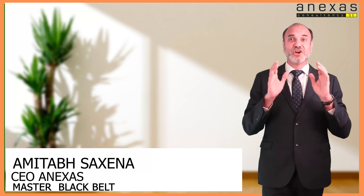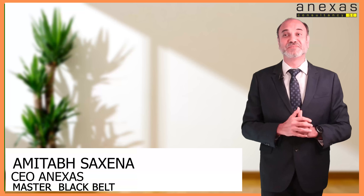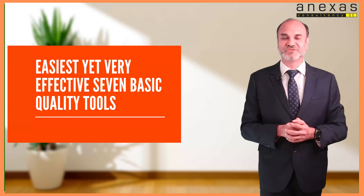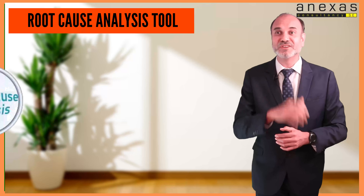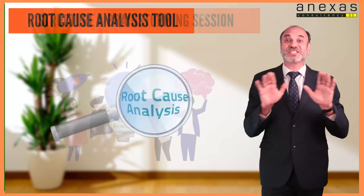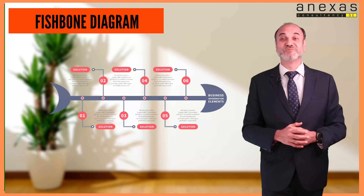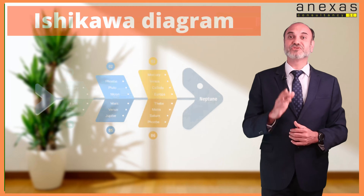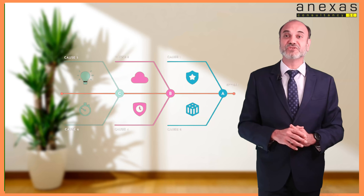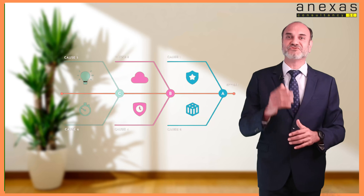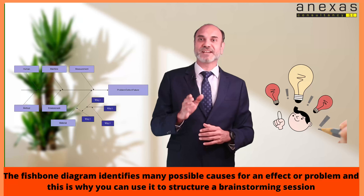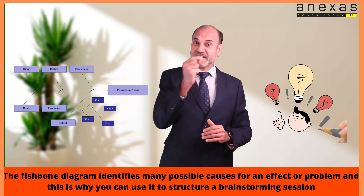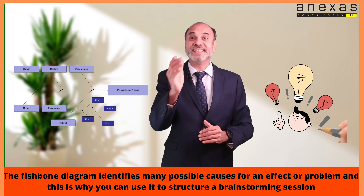Now we are going to talk about one of the easiest but very effective seven basic quality tools. This is about a root cause analysis tool which can be used to structure a brainstorming session. I'm going to give you some information about the very famous and useful fishbone diagram. The fishbone diagram is also known as the Ishikawa diagram — a cause and effect diagram that helps managers track down the reasons for imperfections, variations, defects, or failures.